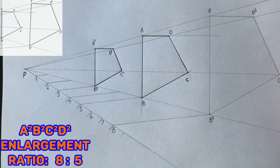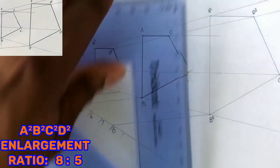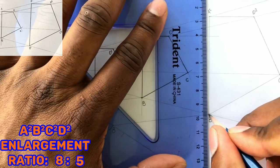Now outline your enlarged quadrilateral A2, B2, C2, D2.